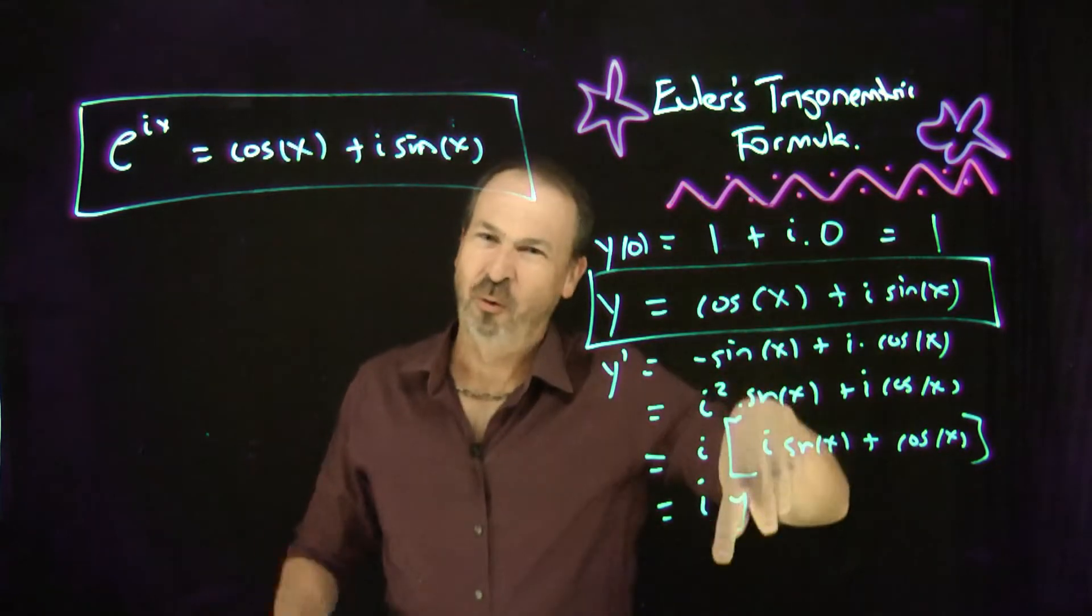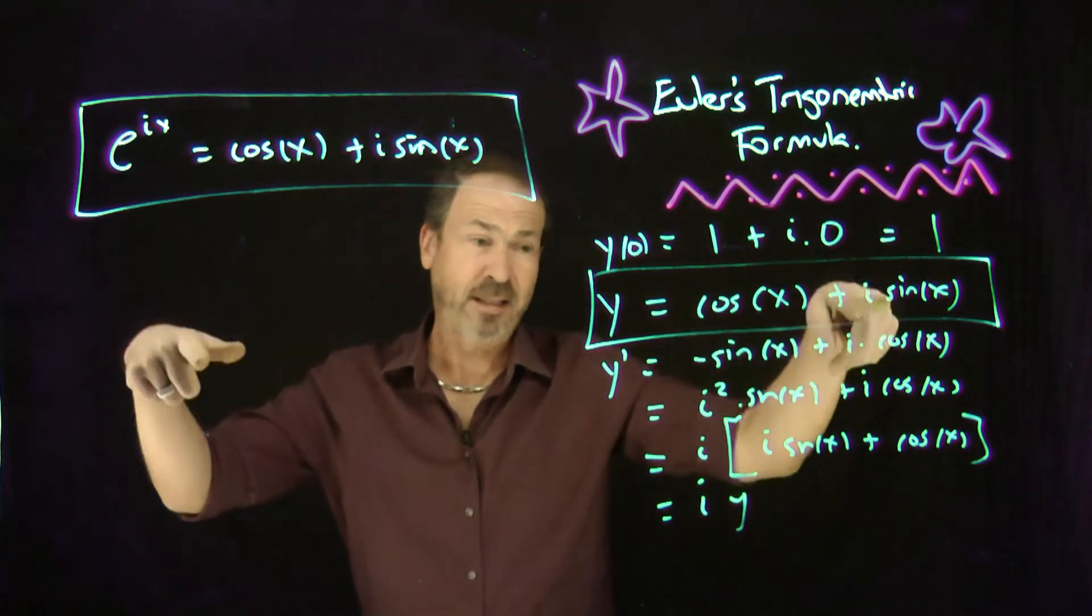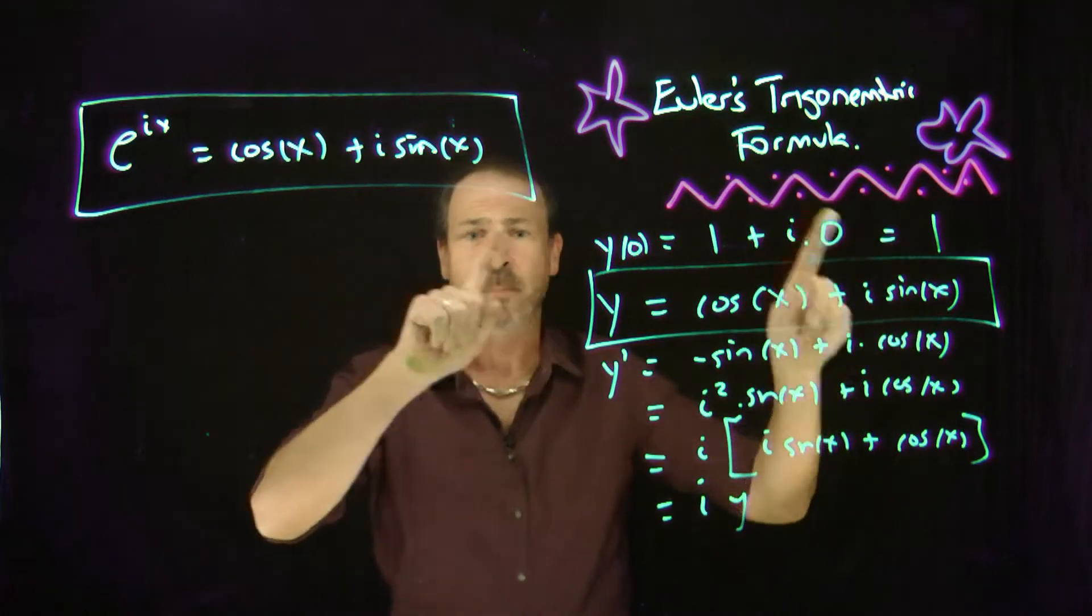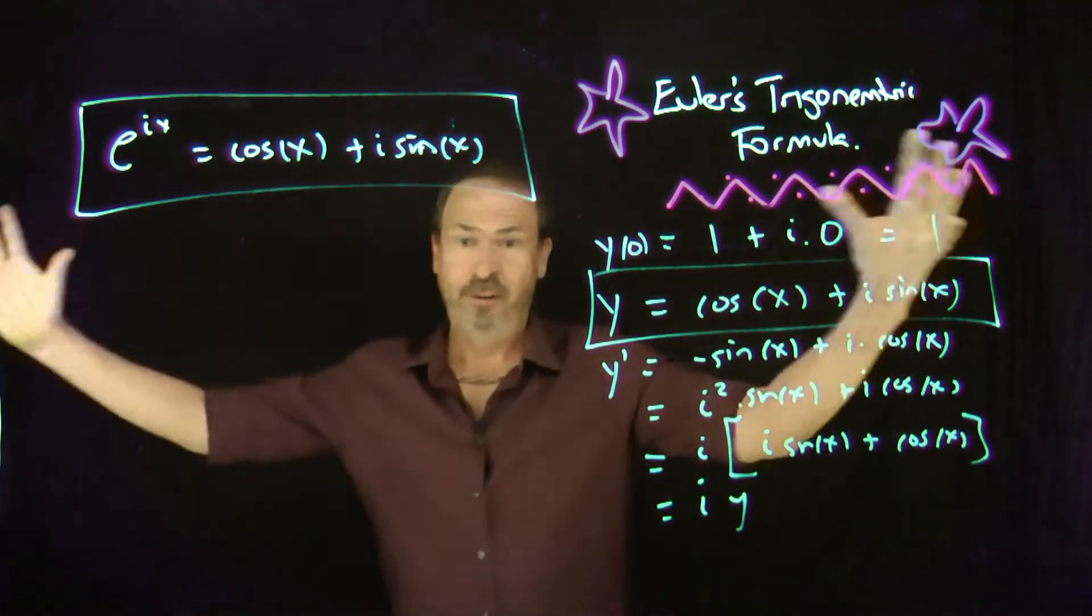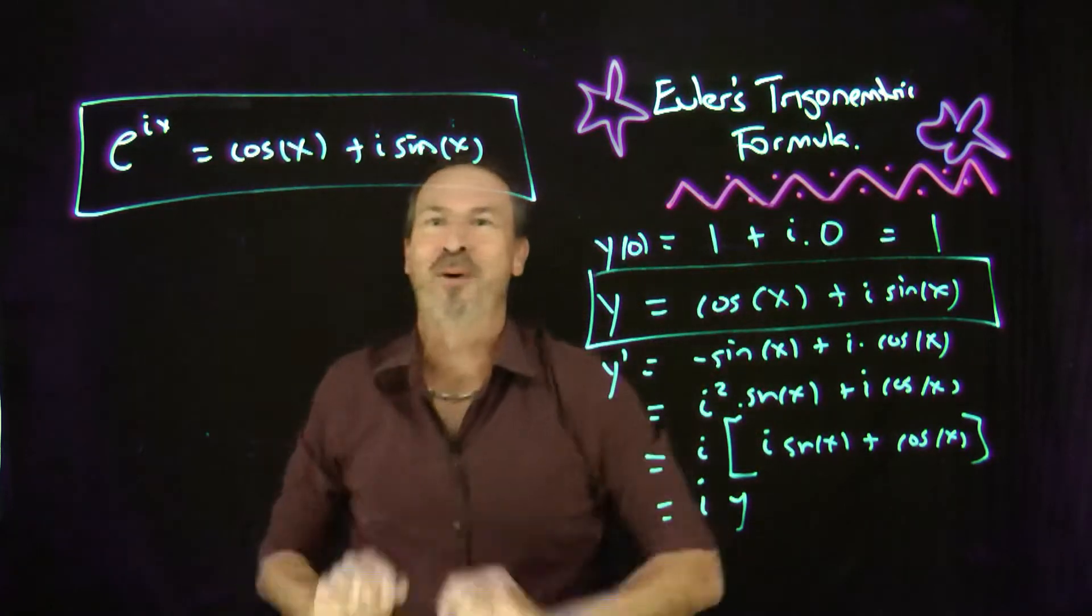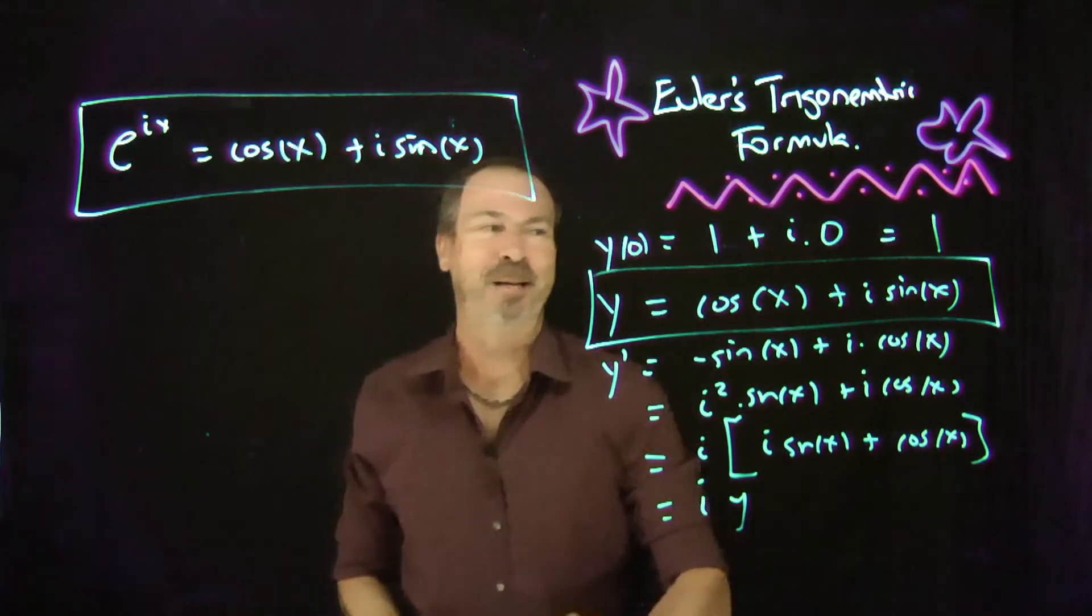Now Euler didn't actually go through quite this approach to get to it. He did use calculus. He actually used more advanced calculus, Taylor series to get to this idea. But he did the same reasoning. He said, well, if this is working for real numbers, then it should work for complex numbers too. And voila, look what pops out. Amazing.